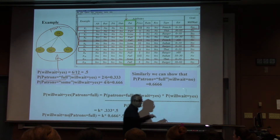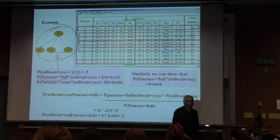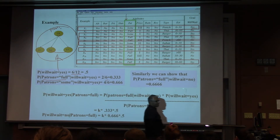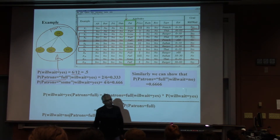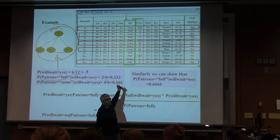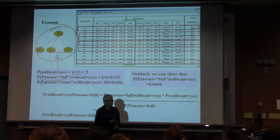Now if I give you a new example and tell you all the attribute values, I ask you: would Russell wait? One interesting thing is, even before I give you the attributes, if I just ask 'will Russell wait?', you say 50-50. Why? Because the prior probability of waiting given nothing is 0.5 — you're actually thinking, and that's the answer from the data.